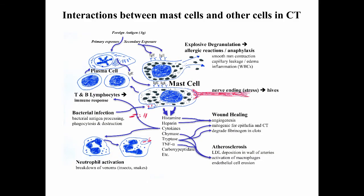This cartoon shows interactions between mast cells and other cells in connective tissue, including plasma cells, lymphocytes, and neutrophils. IgE is an antibody that mast cells will bind. During a secondary immune response with lots of circulating IgE, mast cells can bind that IgE and undergo explosive degranulation — essentially rupturing and releasing all their granules. This is very prominent in allergic reactions and sometimes anaphylaxis, which can be a life-threatening condition.